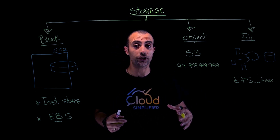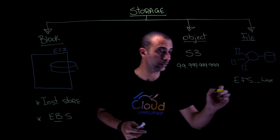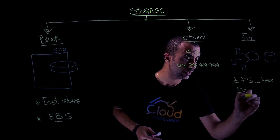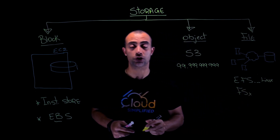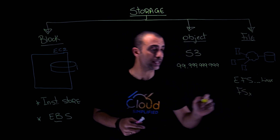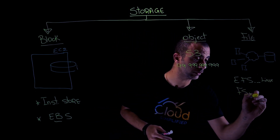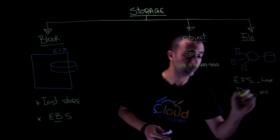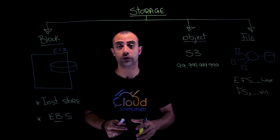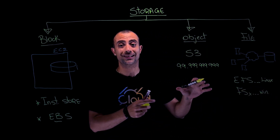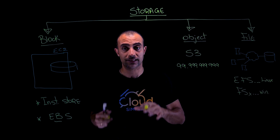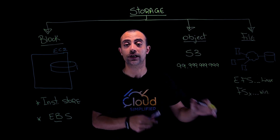But if you have Windows servers, then the service is called FSx. That's the one you can use for your Windows servers, because the underlying protocol is CIFS/SMB.